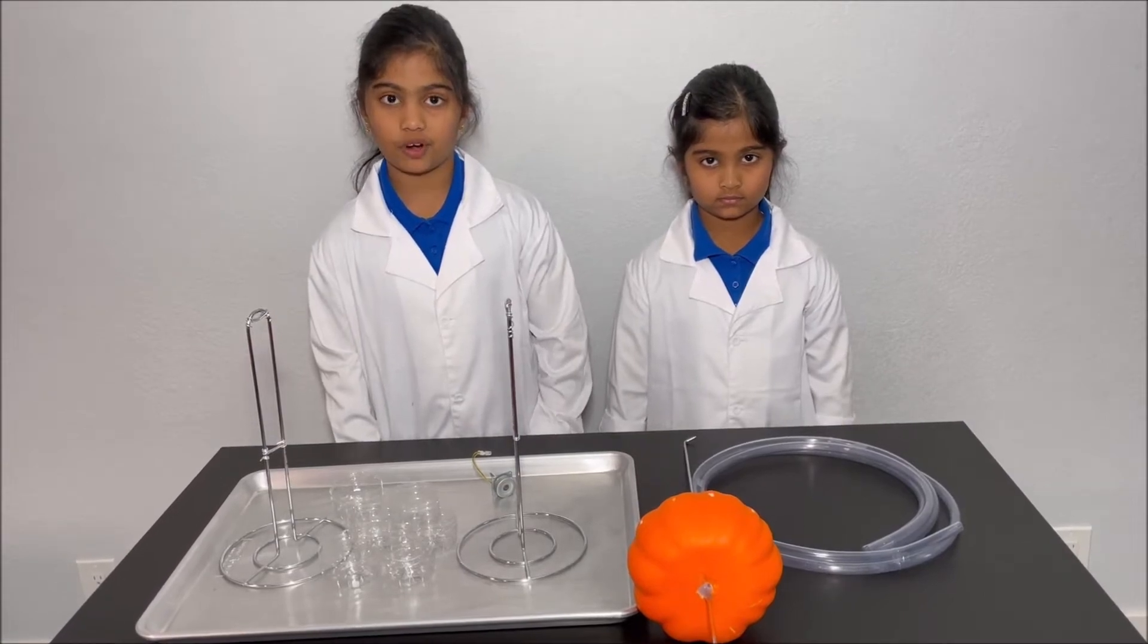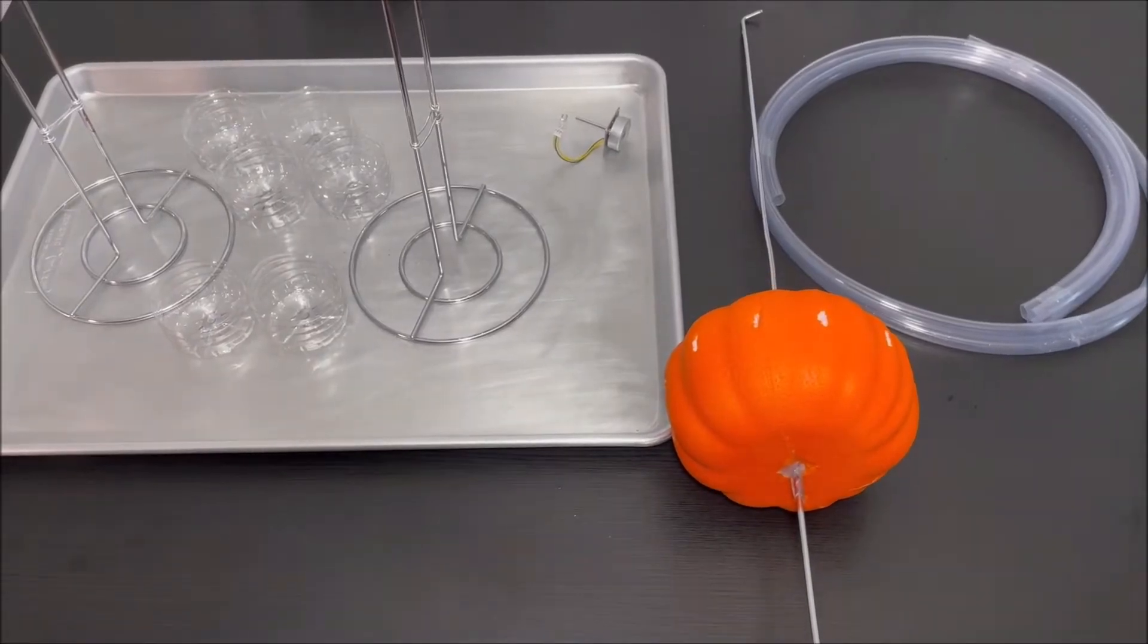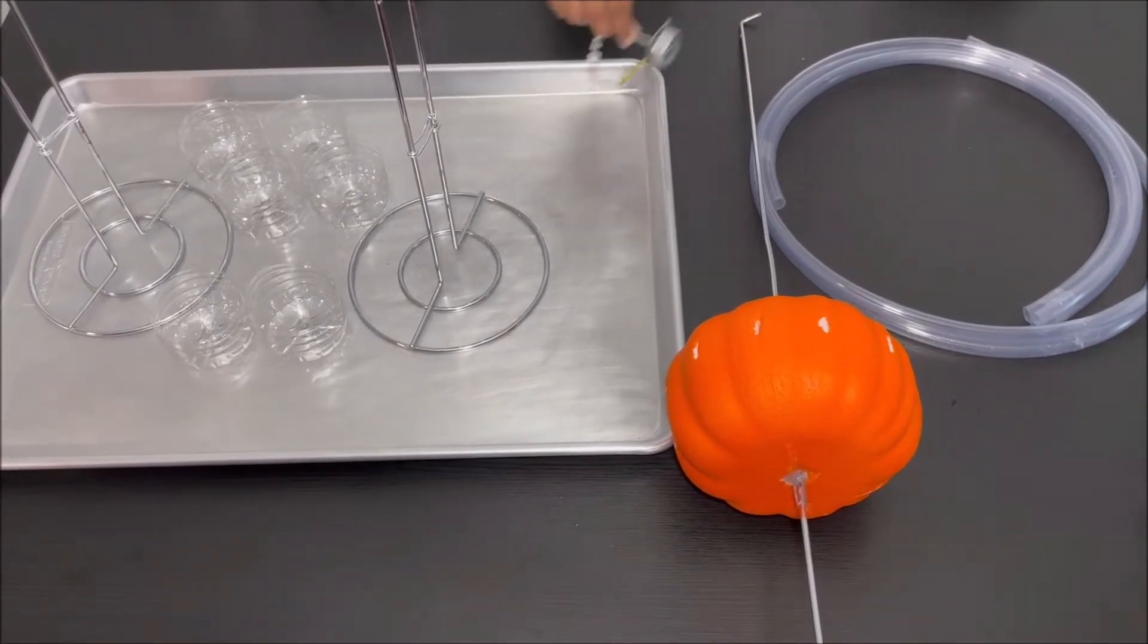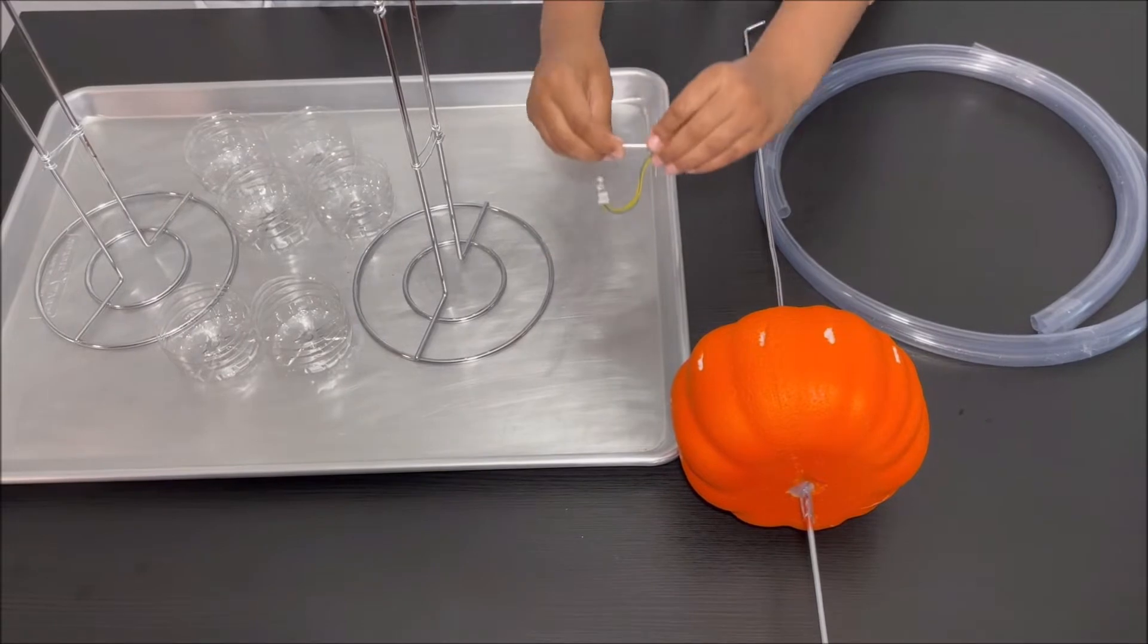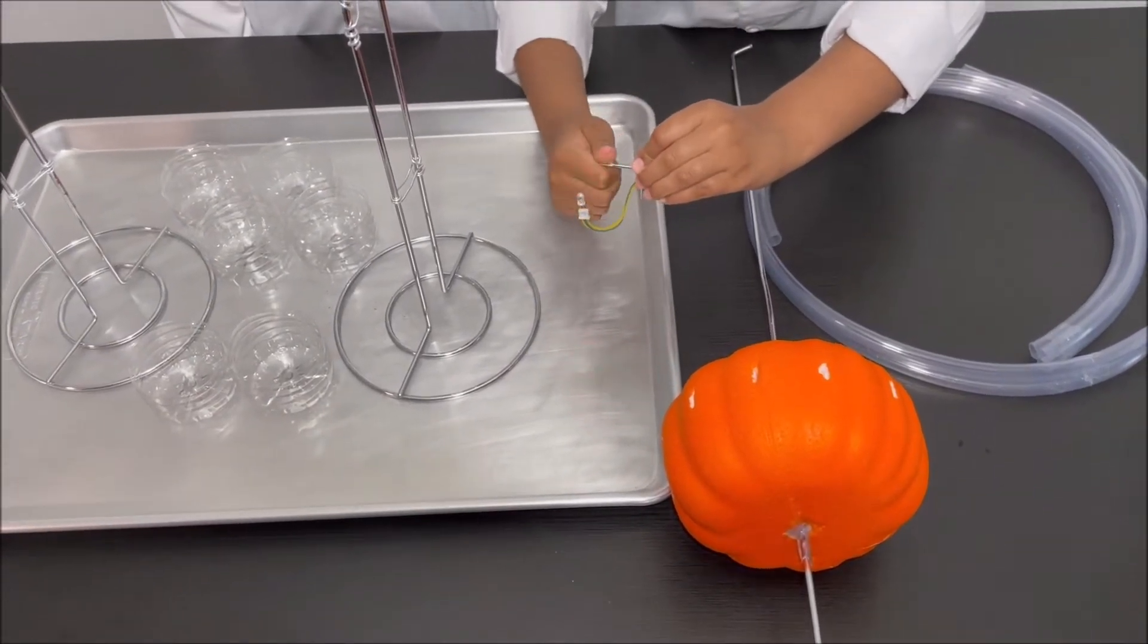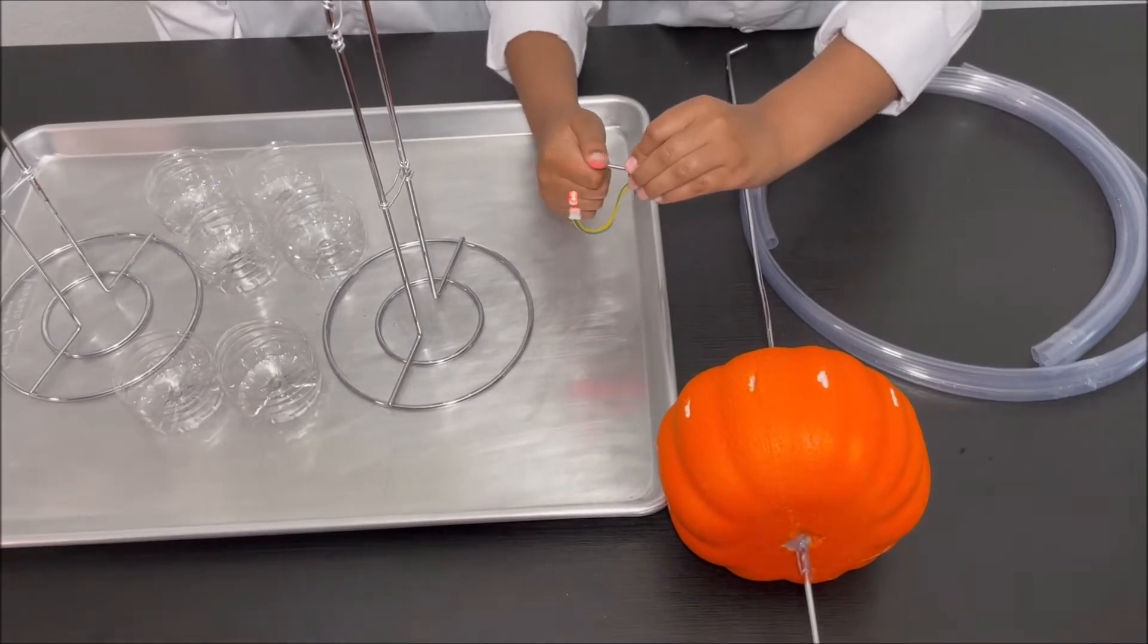For this experiment we need a pipe, a water wheel, and a generator which generates electricity. So when I spin it, it generates electricity which makes the LED light light up.